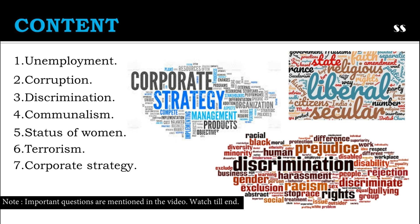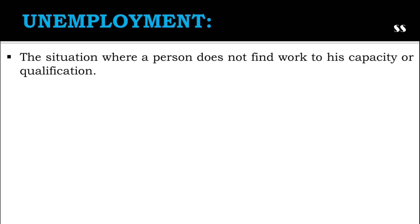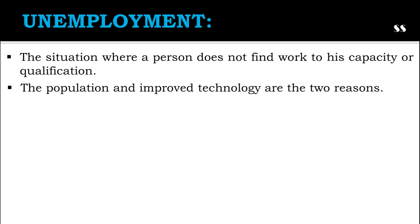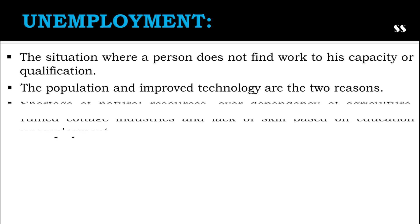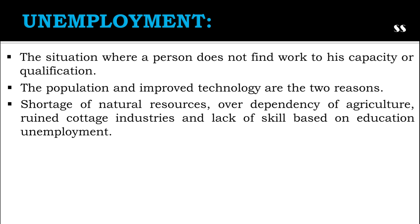First is unemployment. Unemployment is a situation where a person does not find work in accordance with their capacity or qualification. India has a huge population and unemployment is a big problem. Population growth and improved technology are considered two reasons for unemployment. Apart from these, shortage of natural resources, over-dependency on agriculture, ruined cottage industries and lack of skill-based education have made unemployment a huge problem.